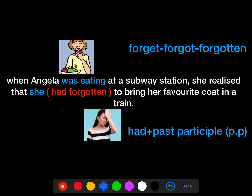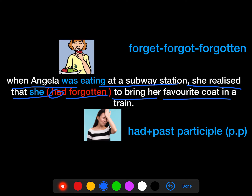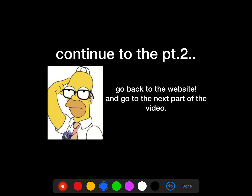Let's see the answer: 'When Angela was eating at a subway station, she realized that she had forgotten to bring her favorite coat on the train.' Don't forget the rules — we need to add 'had' and change the verb into the past participle. In the next video, we are going to practice with the fundamentals we have just learned. Go back to the website and go to the next part of the video. I'll see you in the next video. Bye-bye everyone, thank you very much.